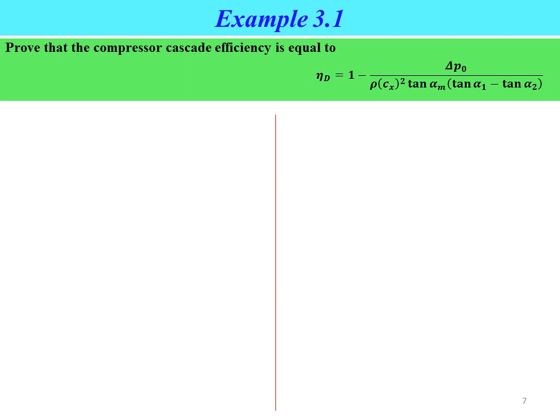Example 3.1: Prove that the compressor cascade efficiency equals mu_d = one minus delta p0 divided by rho cx squared times tangent alpha_m multiplied by the bracket (tangent alpha_1 minus tangent alpha_2). First, consider the general equation of efficiency for a compressor cascade, where the basic formula is mu_d = (p2 - p1) / (p2 - p1)_maximum, referred to as Equation 1. We need to find expressions for p2 minus p1 and also p2 minus p1 maximum.